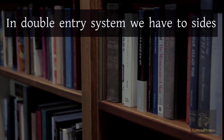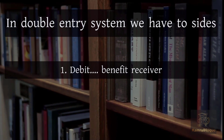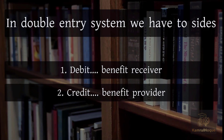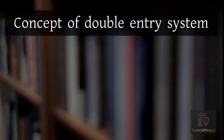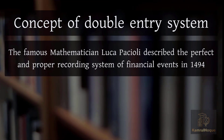In the double entry system, we have two sides: Debit, which is the Benefit Receiver, and Credit, which is the Benefit Provider. The famous mathematician Luca Pacioli described the perfect and proper recording system of financial events in 1494.